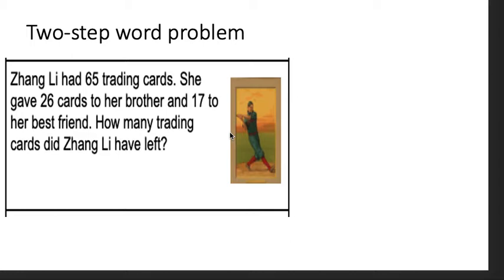Zhang Lee had 65 trading cards. She gave 26 cards to her brother and 17 to her best friend. How many trading cards does Zhang Lee have left? So, after reading it the first time, I know it's about somebody named Zhang Lee. She has trading cards. She gave some away to one person, and she gave some away to another person.